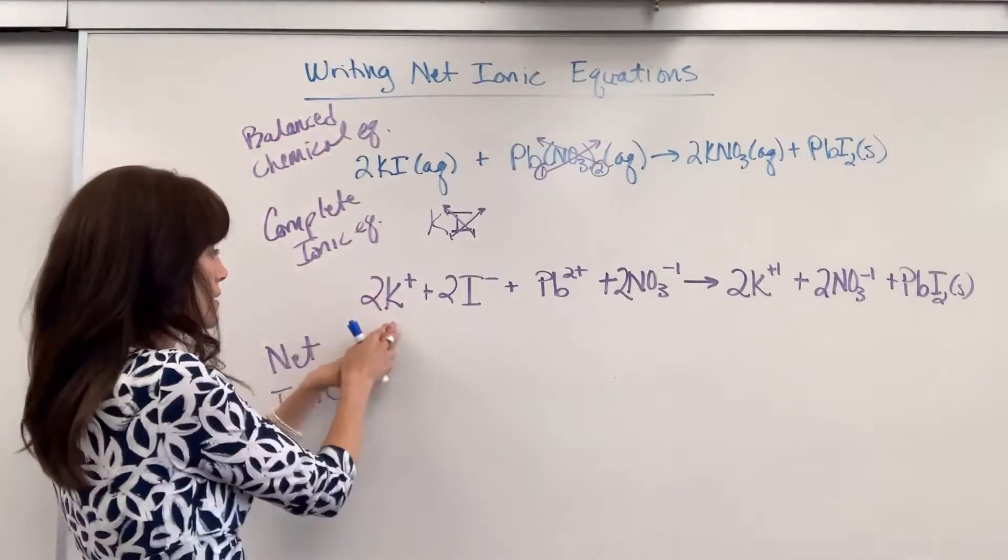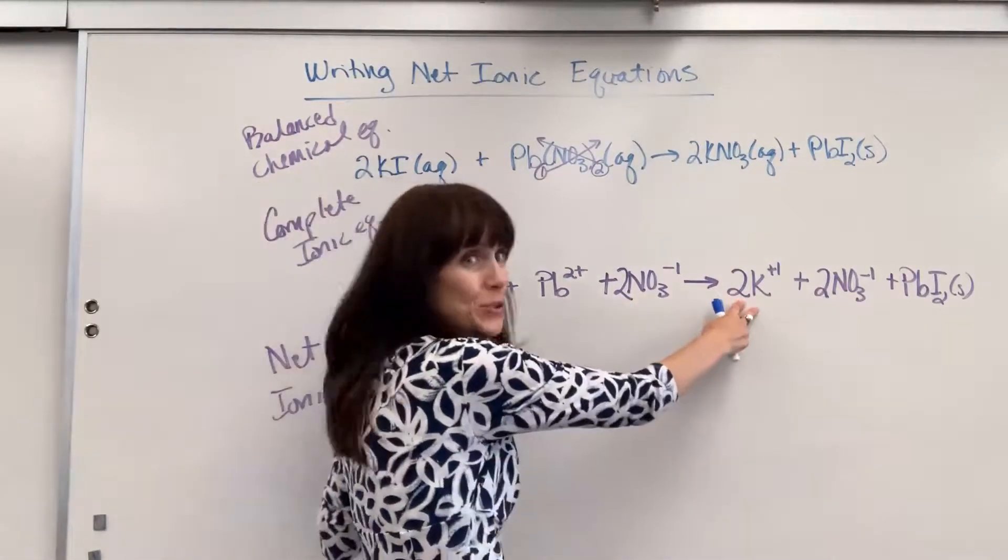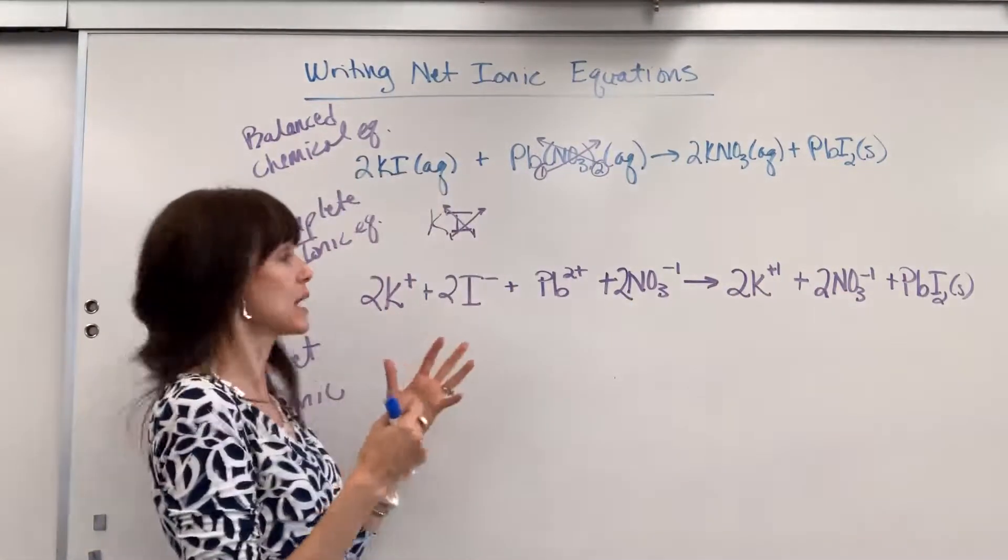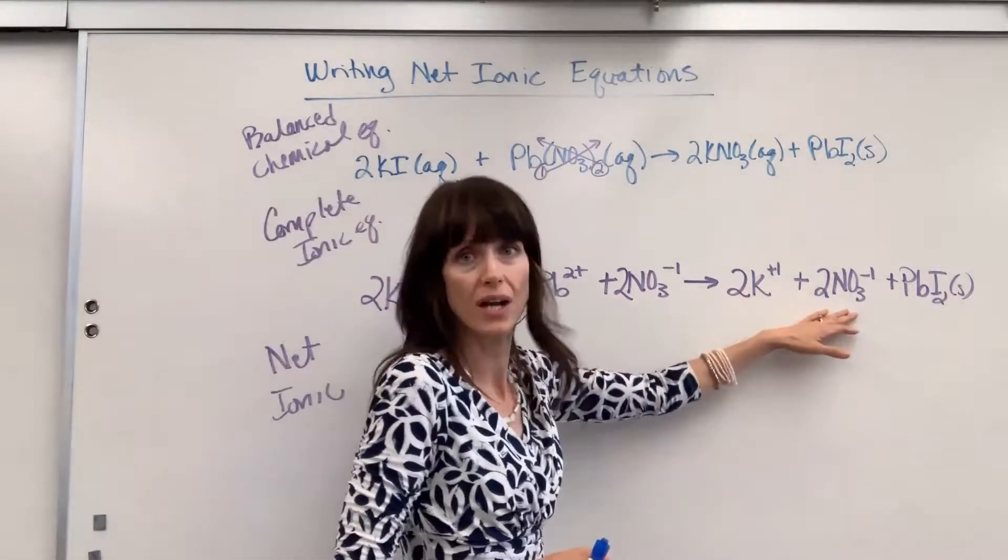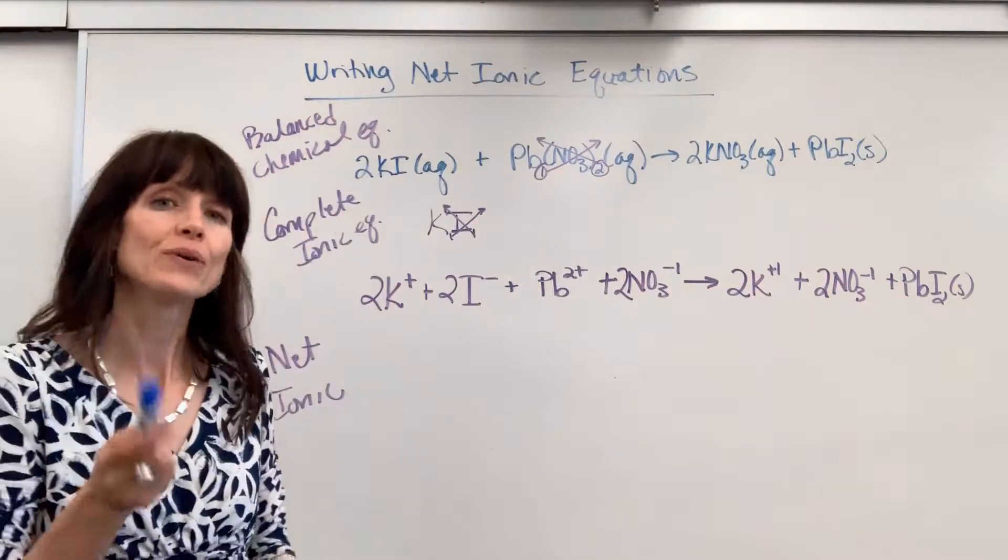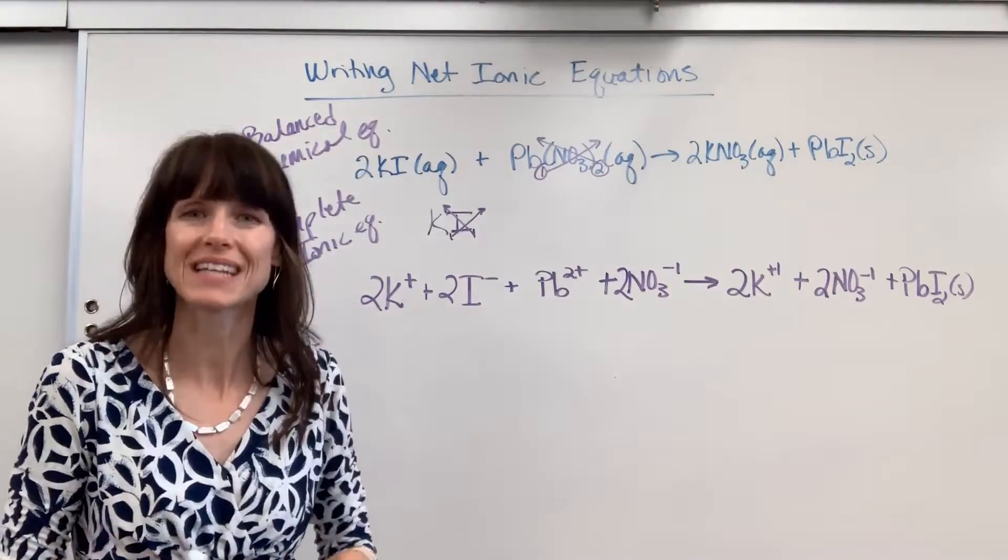I have two potassium ions. Two potassium ions. They're the same. I have two nitrate ions and two nitrate ions. They're the same for reactant to products. Those have a special name. They're called spectator ions.